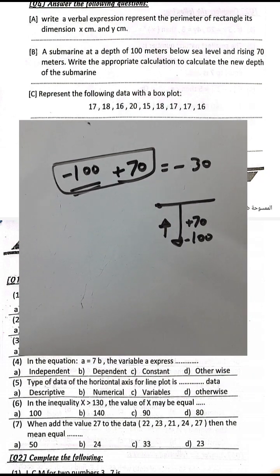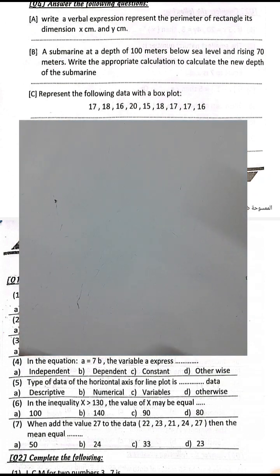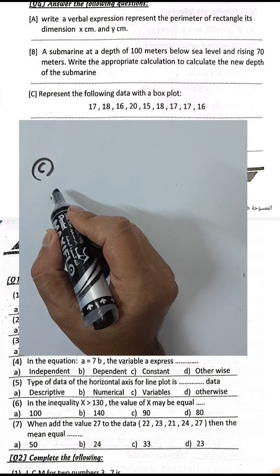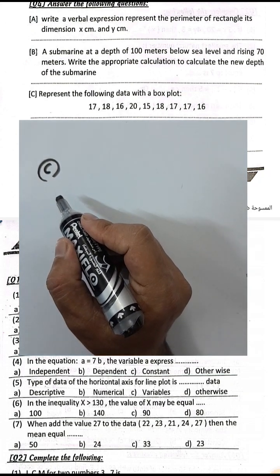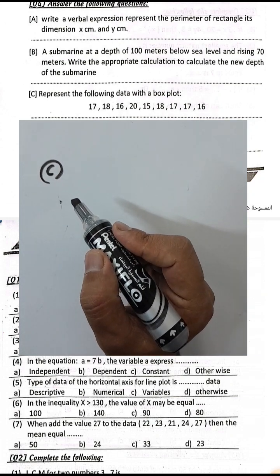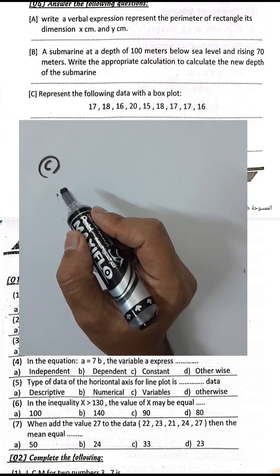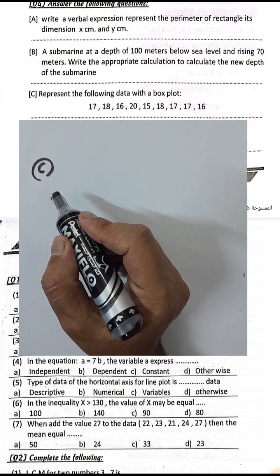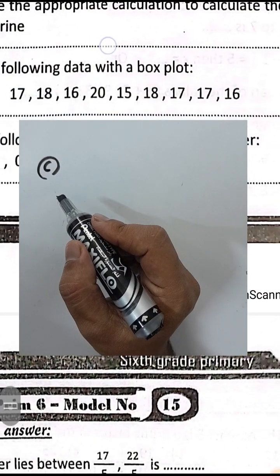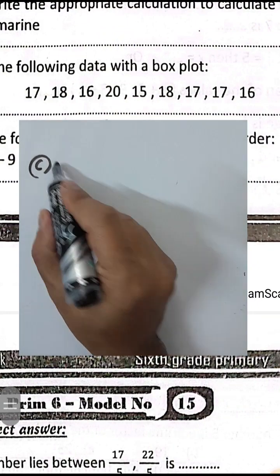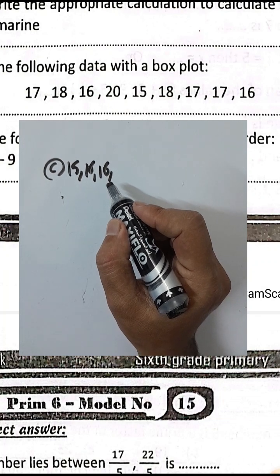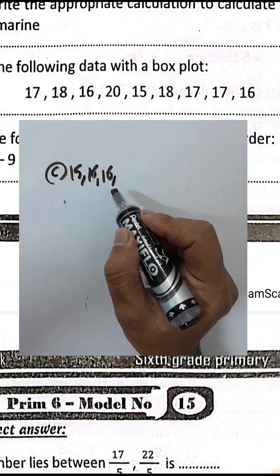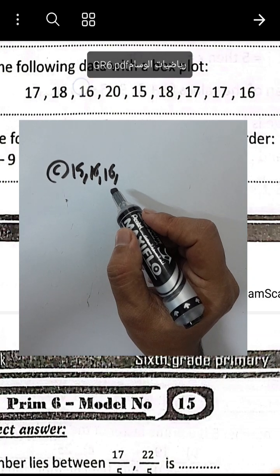Question letter C: Represent the following data with a box plot. First, arrange all values in ascending order from least to greatest. The sorted values are: 15, 15, 16, 16, 16, 16, 17, 17, 17, 18, 18... continuing to 19 and 20.